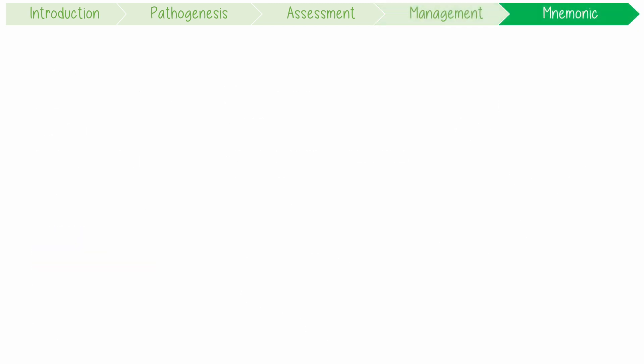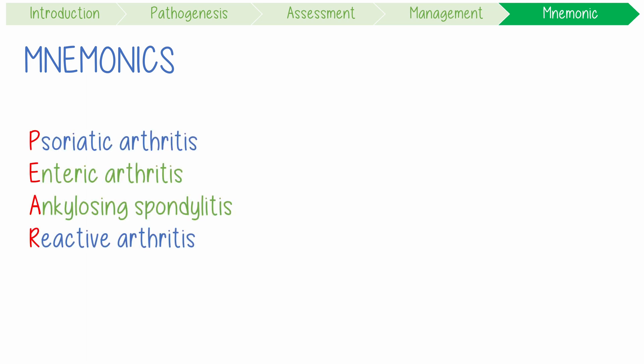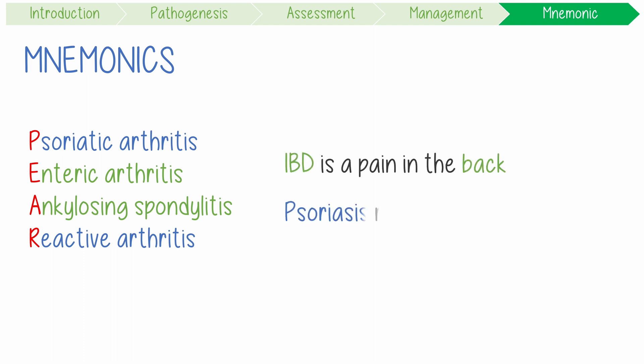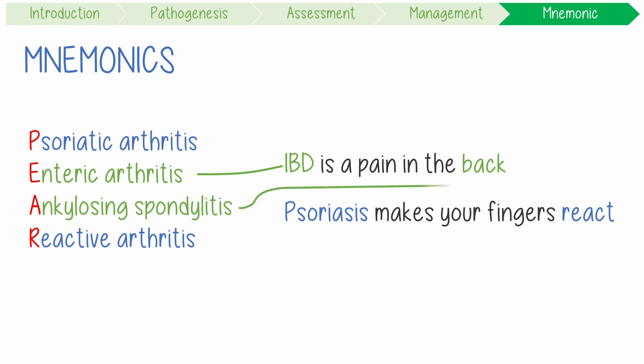To summarise with a mnemonic: enteric arthritis is a PAIR disease. It's also good to remember that IBD is a pain in the back, while psoriasis makes your fingers react. This helps you remember enteric arthritis coexists with IBD and is like ankylosing spondylitis in its clinical picture by virtue of its proximal axial arthropathy. This is different to both psoriatic arthritis and reactive arthritis, which both involve peripheral small joint arthropathy in the hands and fingers.